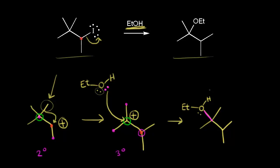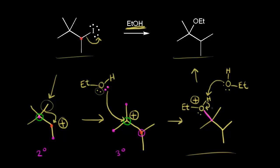That gives a plus one formal charge on the oxygen. If we compare this to our final product, notice all we have to do is deprotonate. So the last step of the mechanism is just a proton transfer — an acid-base reaction. Another molecule of ethanol could come along and serve as the base. One of its lone pairs could pick up this proton, leave these electrons behind on this oxygen, and finally give us our product.